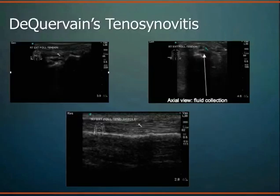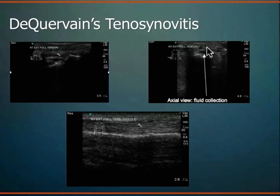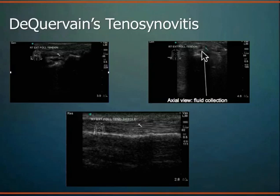This is de Quervain's tenosynovitis: the deep bony cortex, joint space, and overlying tendon tissue — the extensor pollicis brevis (EPB), part of the de Quervain's complex. You can see it very nicely, very superficially. With tendonitis you tend to see fluid and inflammation surrounding the tendon. In short axis view, the tendon appears as a small dot running lengthwise, and you'll see an anechoic fluid collection around it — a halo or 'target sign' — indicating fluid in the tendon sheath, which is your tenosynovitis.